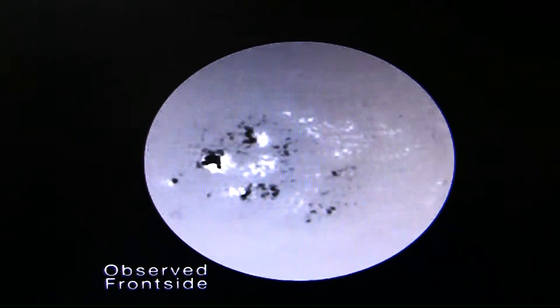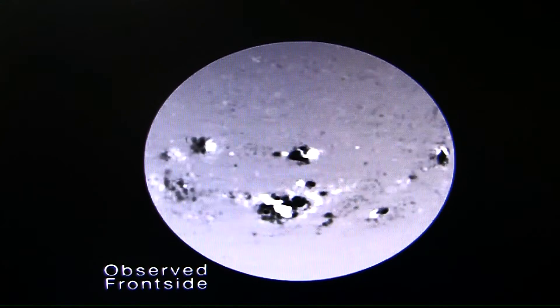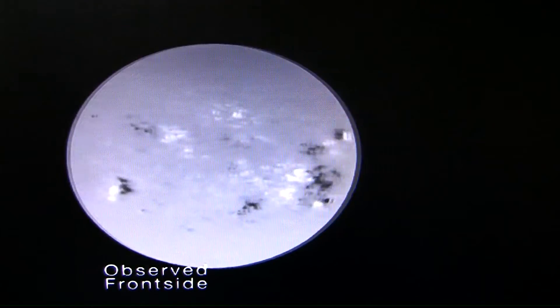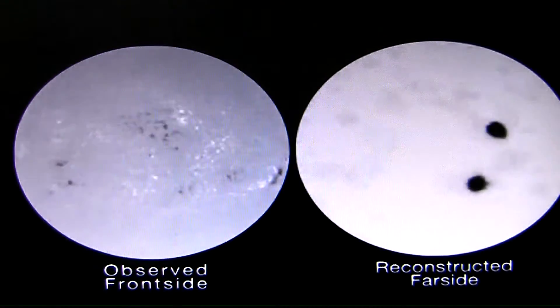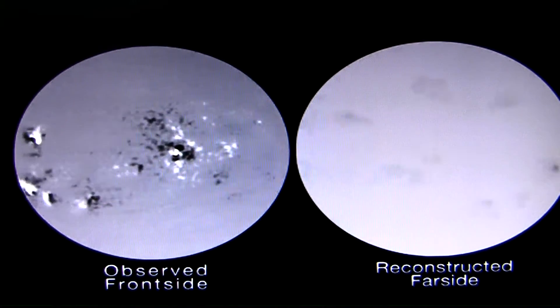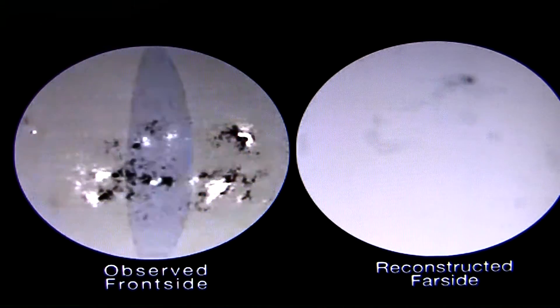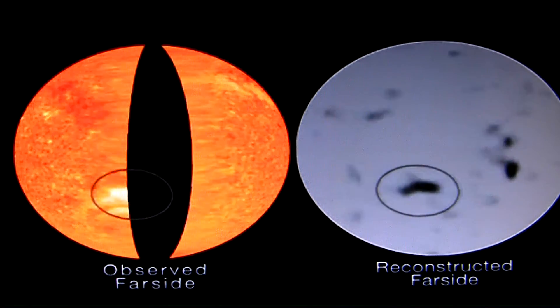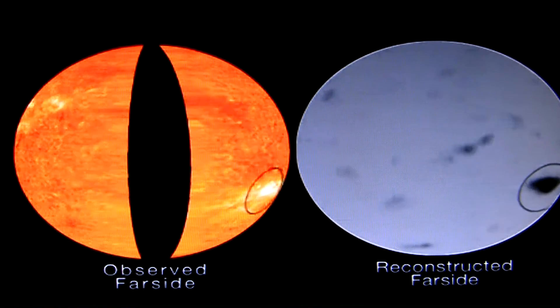Scientists first began to get a sense of the far side with SOHO's Michelson-Doppler imager, which worked almost like an ultrasound to give a view of the sun's back based on observations of the ripples on its front. Now STEREO can make direct observations and eliminate any uncertainty about activity on the far side of the sun.